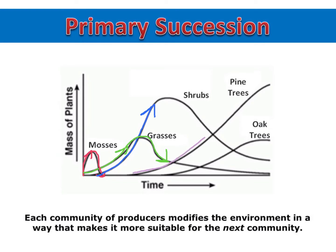Eventually, a pine tree forest began to grow. This blocked out light from the shrubs, so the shrub community declined. And finally, the hardwood oak trees that will eventually become the climax community join the ecosystem.